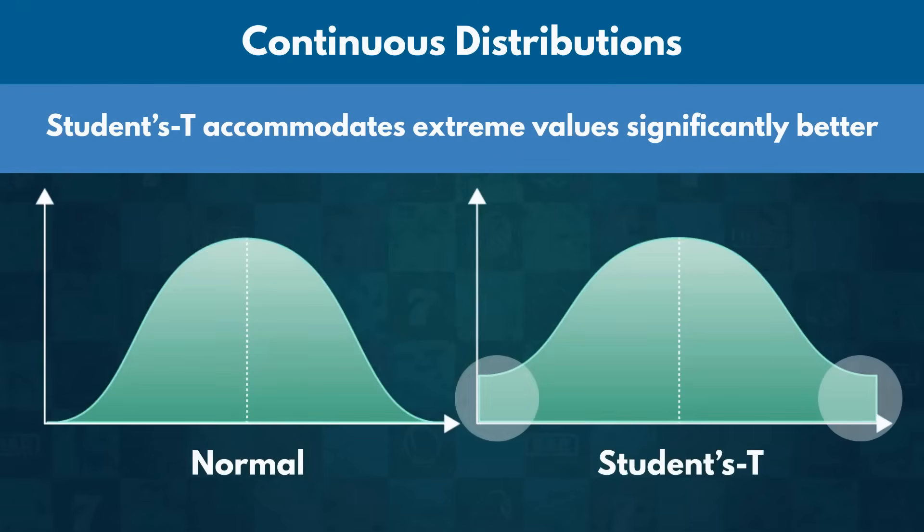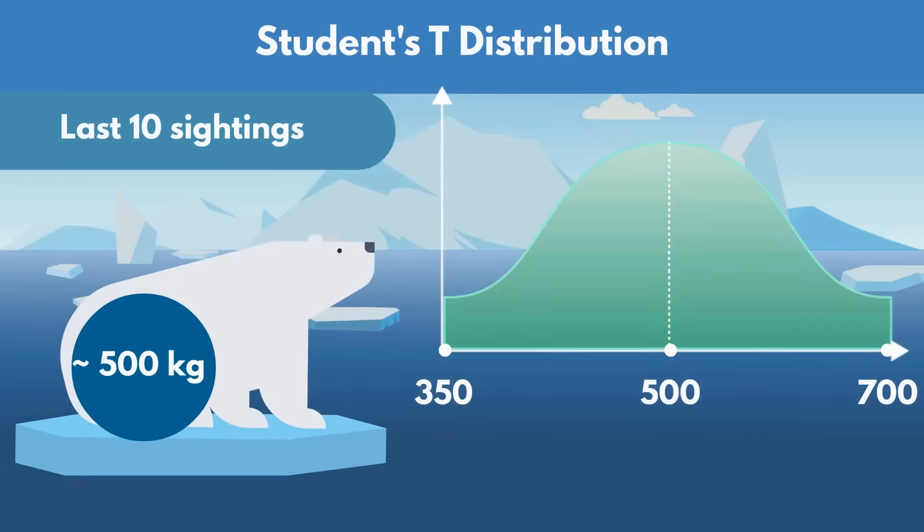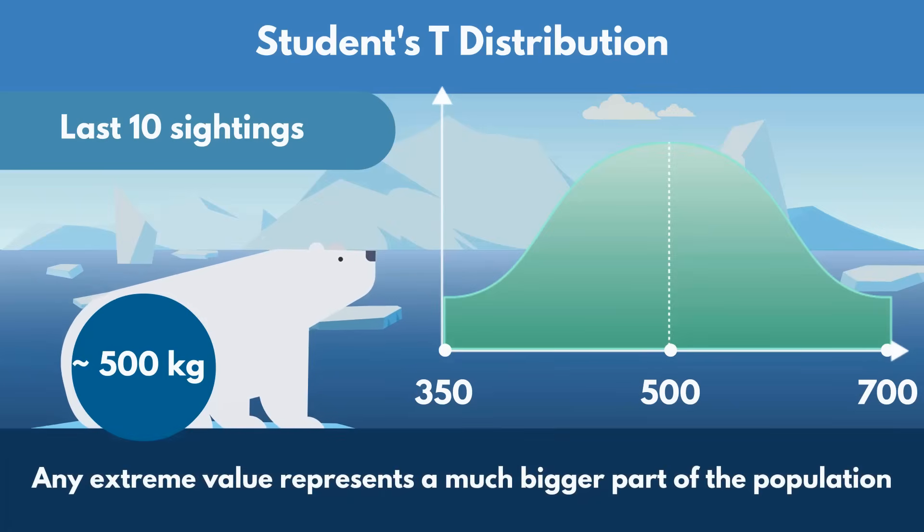Graphically, that is represented by the curve having fatter tails. Overall, this results in a larger number of values located far away from the mean, so the curve would probably more closely resemble a student's T distribution than a Normal distribution. Now, imagine only looking at the recorded weights of the last 10 sightings across Alaska and Canada. The lower number of elements would make the occurrence of any extreme value represent a much bigger part of the population than it should.